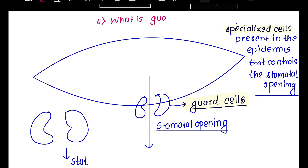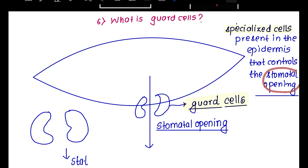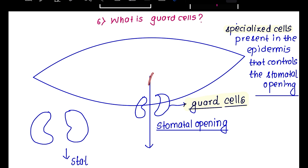The guard cell is a specialized cell in the epidermis that controls the stomatal opening. Guard cells control the opening and closing of stomata.